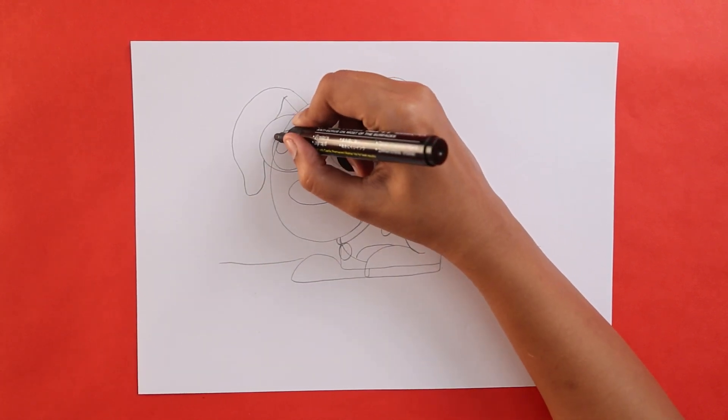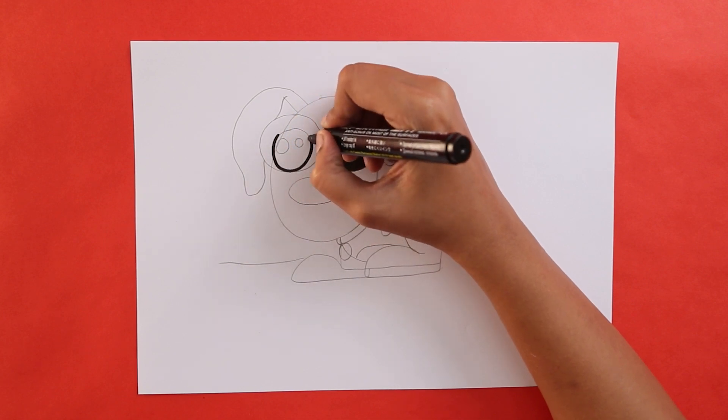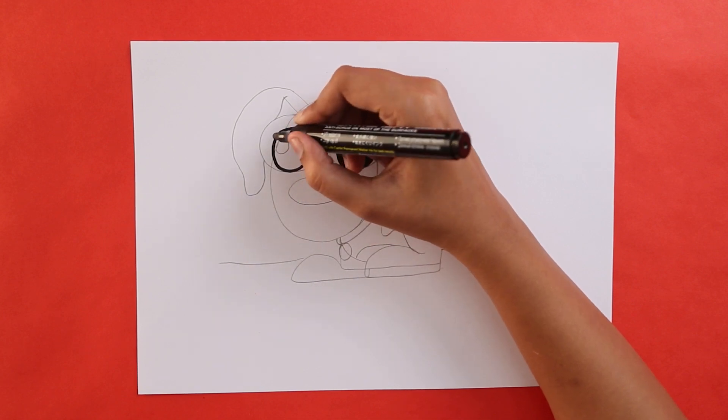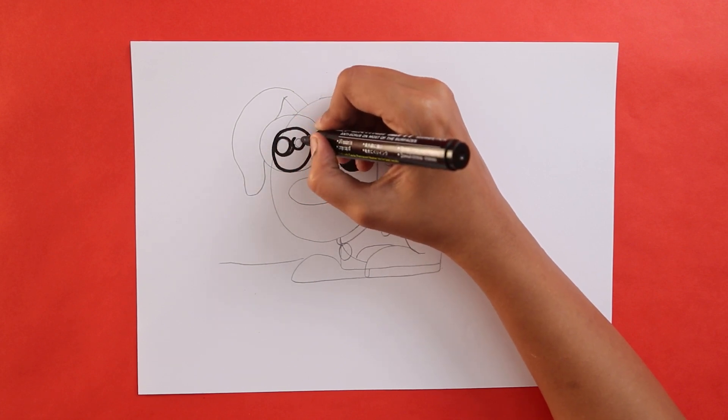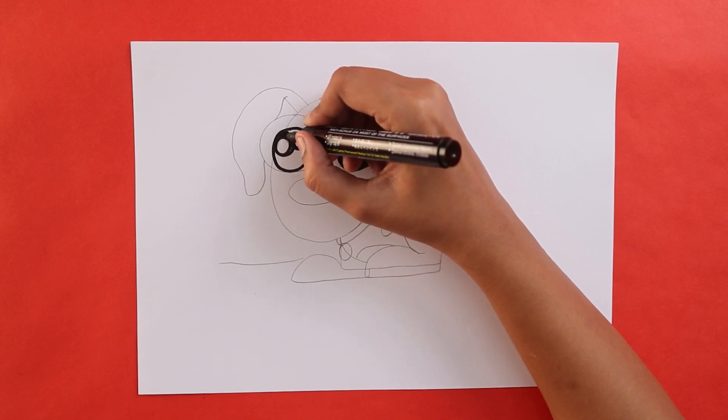Now you can outline the outer circle. Remember to outline only the pencil marks. Here we go.